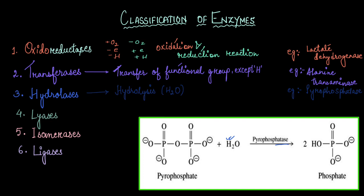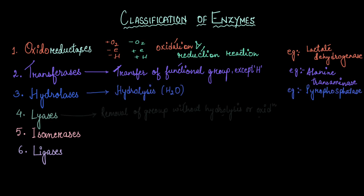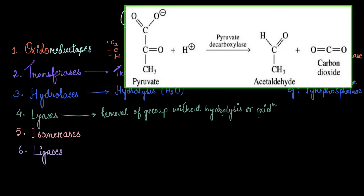Now let's move on to the fourth class of enzyme, which is lyases. Any group of enzyme that has the capacity to remove a group from its substrate without hydrolysis or oxidation we group them under the lyase class of enzymes. Let's look at an example. Here is pyruvate which loses its carbon and two oxygens, forming acetaldehyde and CO2.